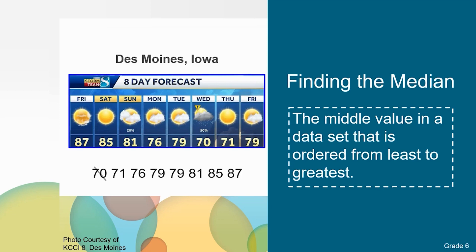So I can start at the ends by crossing out 70 and 87. And now I'm working my way in to cross out 71 and 85. I can work to the next point, 76 and 81. And now I see that I have two numbers in the middle. I notice these numbers are the same. So the median is 79. If the numbers were different, I would find the sum of the two middle data points and then divide by two. But I don't need to do that because the middle data points are the same.